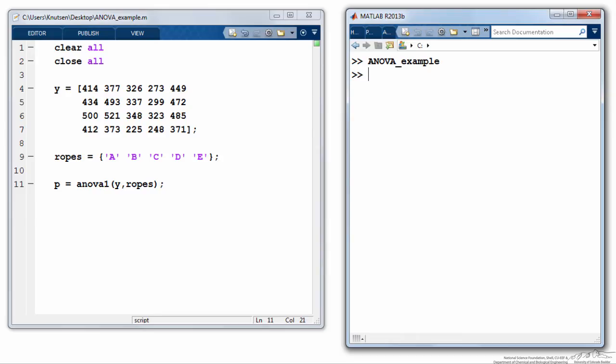When I run that script, I've stored my p-value as a variable p, and on the command line I enter the letter p and come up with a p-value that is much less than 0.05. So there's very strong evidence that at least one of the mean breaking strengths for one of the ropes differs from the other.